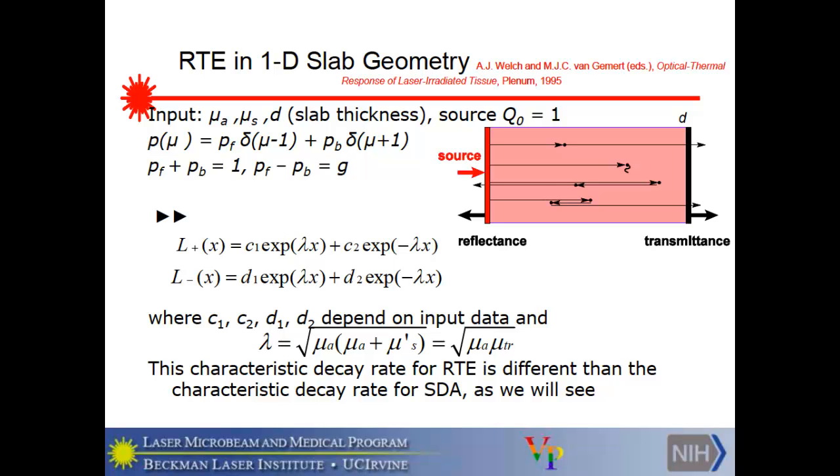So c1, c2, d1, d2 will depend on the input data. And lambda, which is the characteristic decay rate in one dimension, turns out to be this quantity, the square root of absorption times the transport cross-section. And keeping in mind that you'll want to look back at this when there's more discussion of diffusion, this decay rate is different from that in diffusion. So that's, it does not predict faithfully that, or putting it in the better way, the SDA doesn't predict faithfully the decay rate in transport.